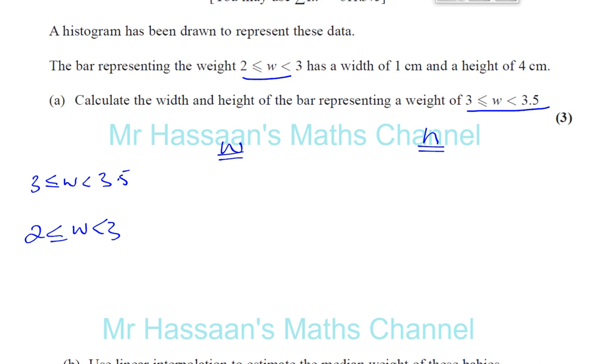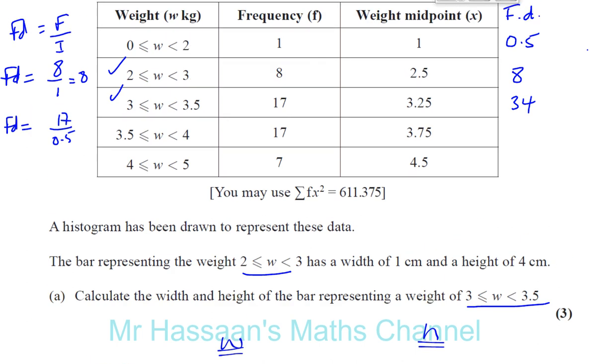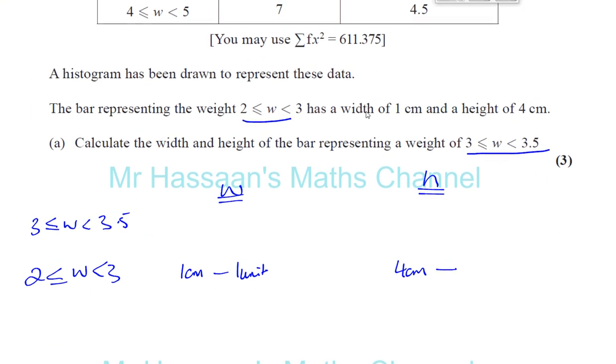Now, the 2 to 3 bar, we know the width is 1 centimeter, and that's representing 1 unit. And for the height of the bar is 4 centimeters. We can say 4 centimeters represents a frequency density of 8. It's for the 2 to 3 bar. 8 units frequency density.